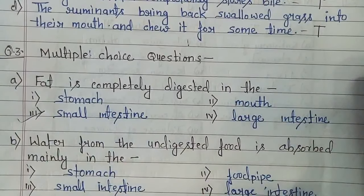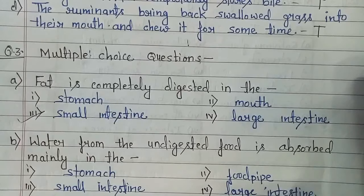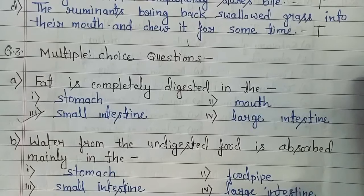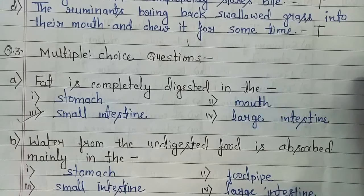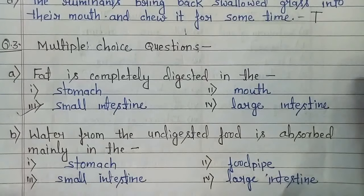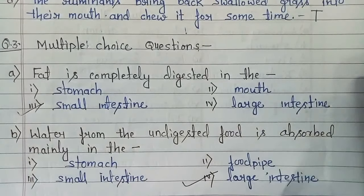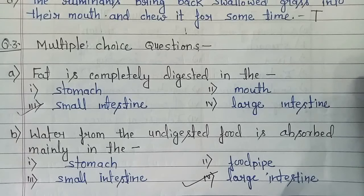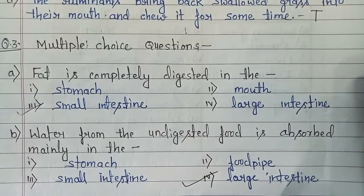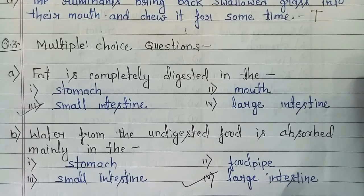Part B: water from the undigested food is absorbed mainly in which organ? That is very simple — in the large intestine, because undigested food passes there and water and minerals are absorbed in this process.